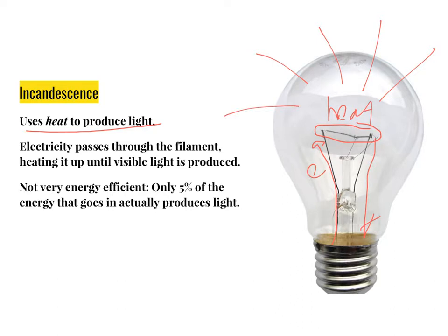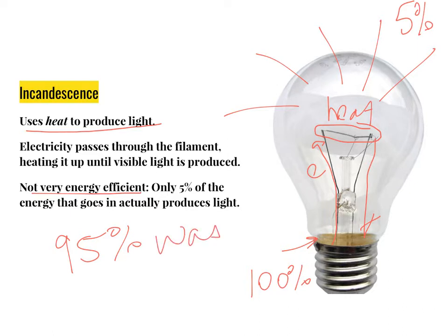Now, incandescent light bulbs are some of the oldest forms of light bulbs. They take off the idea of candles and burning gas lamps and things like that. However, they are not very efficient. They only actually produce 5% light. So if you put 100% in, 5% of it comes out as light and 95% is wasted, most of it as heat. This fact is important when we compare incandescent light bulbs to fluorescent light bulbs.